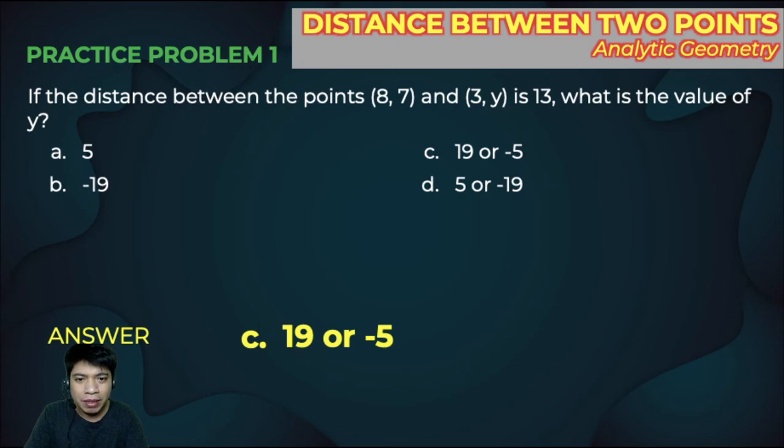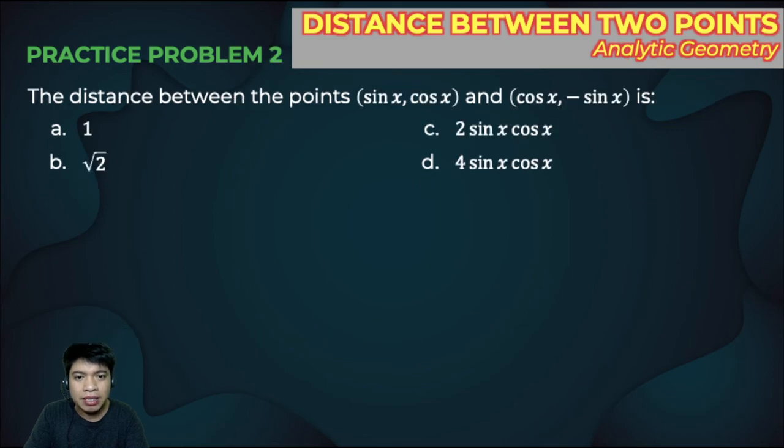Next problem. The distance between the points sine x comma cosine x and cosine x comma negative sine x is? If you want to solve, just pause the video. I will now reveal the answer. The answer is letter B, that is square root of 2.